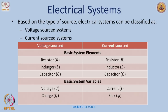Similarly, for a current sourced circuit or system, the basic system variables are the current and the corresponding flux. I will also show you why this is true. Of course, the basic elements remain the same: the resistor, inductor, and capacitor.